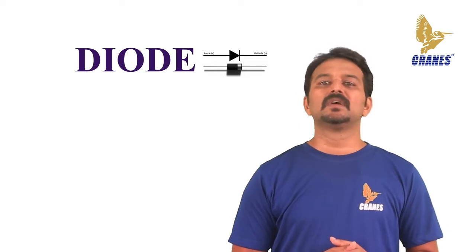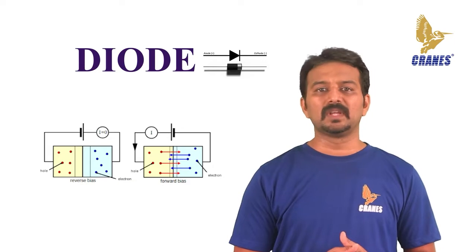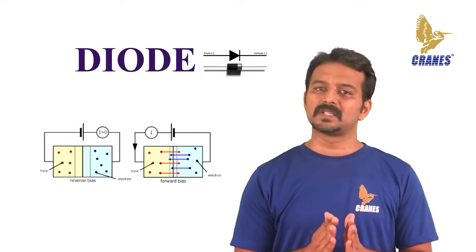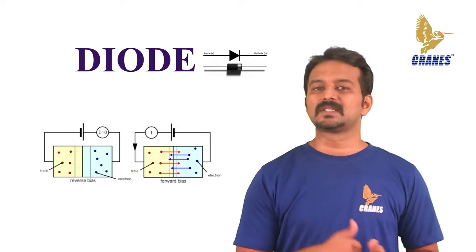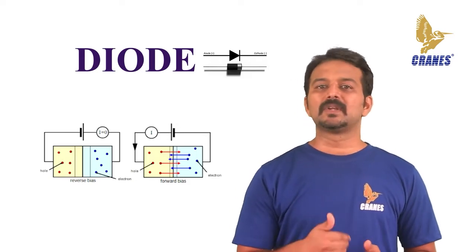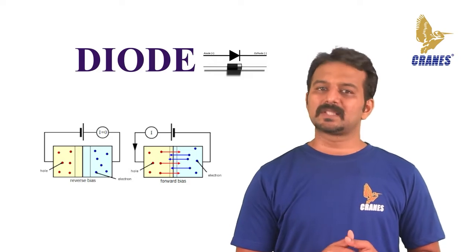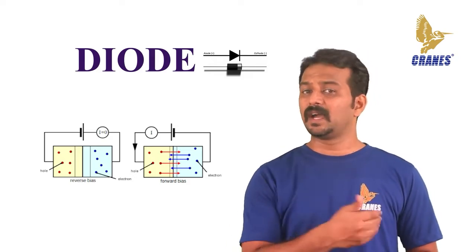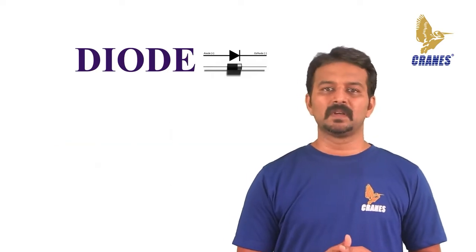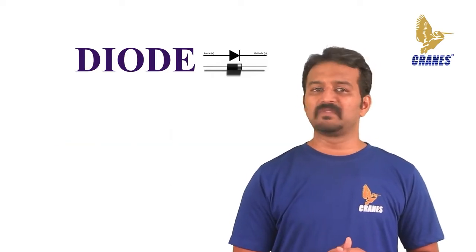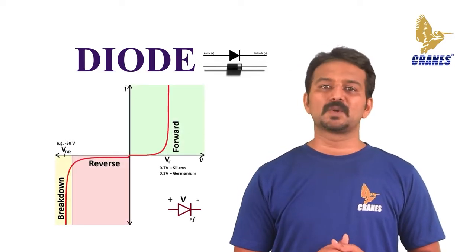Semiconductor diodes are the most common type of diodes. These diodes begin conducting electricity only if a certain threshold voltage is present in the forward direction — that is, the low resistance direction. Then the diode is said to be forward biased. When connected in the reverse direction — the high resistance direction — the diode is said to be reverse biased.